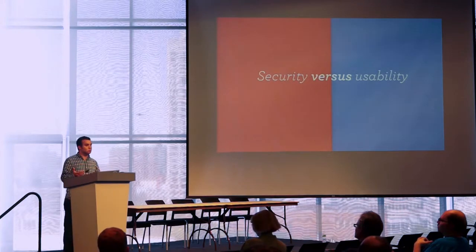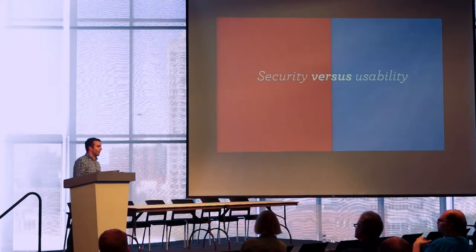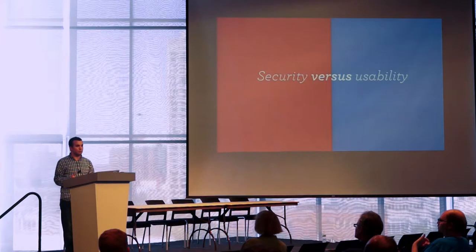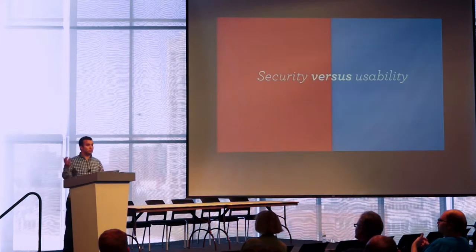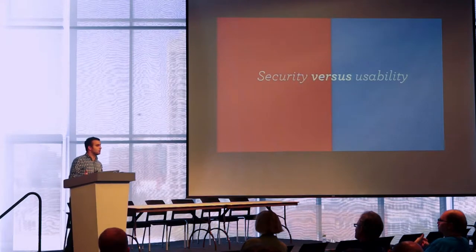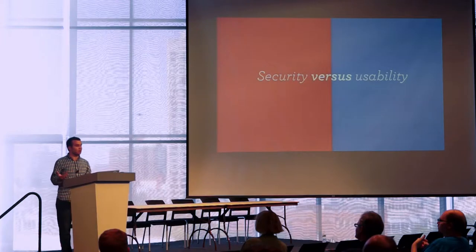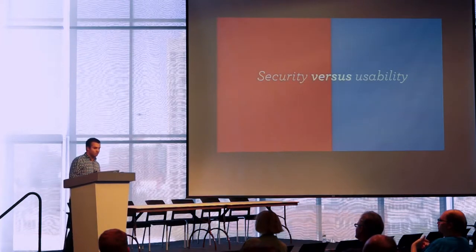Of course, what people have noticed is that when things are more usable — when they make something secure — people will actually go ahead and use it. For example, there are a number of web-based mail clients that are now doing PGP encryption on their email automatically for users. More people are going to start using it because they don't need to worry about it. The moment you decrease usability, security can go up, but people may not use it.